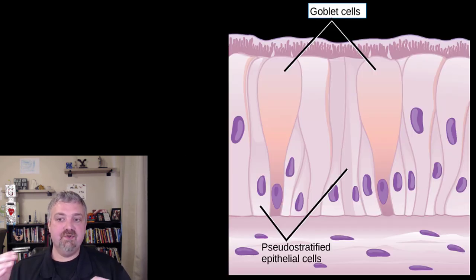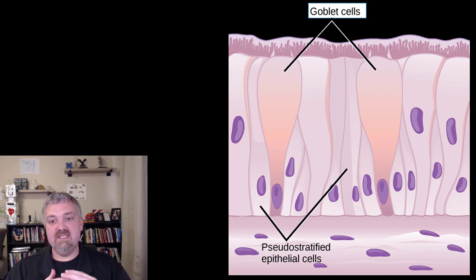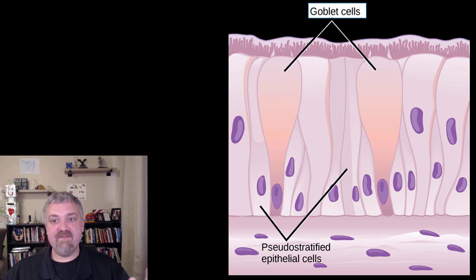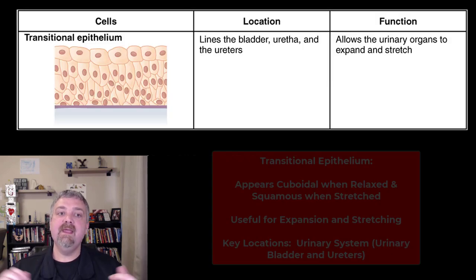Here's another picture. You can see it's pseudo-stratified because the nuclei are scattered. I mentioned goblet cells — the cells that make mucus. These cells have to constantly be lubricated to keep them safe, and that's what the mucus-producing goblet cells do.